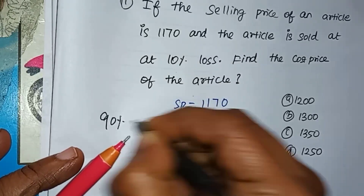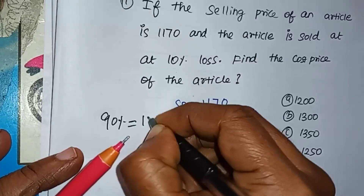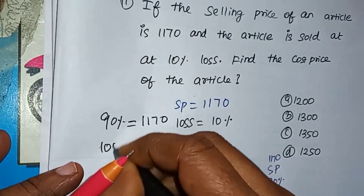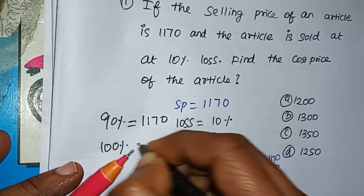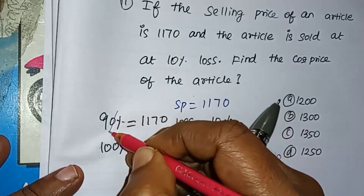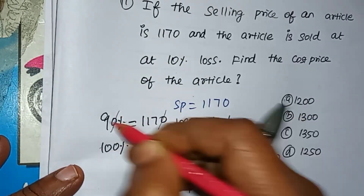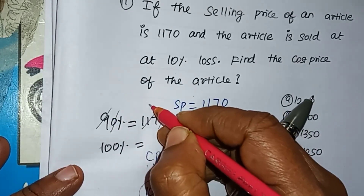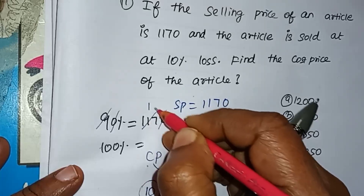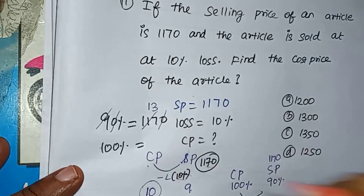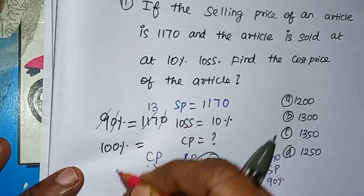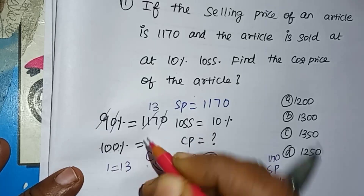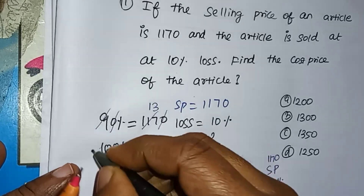The cost price is taken as $100. We take 100% as the base. If we have to cross-multiply, we cancel the value and we get 13. We get the cost price using this method.